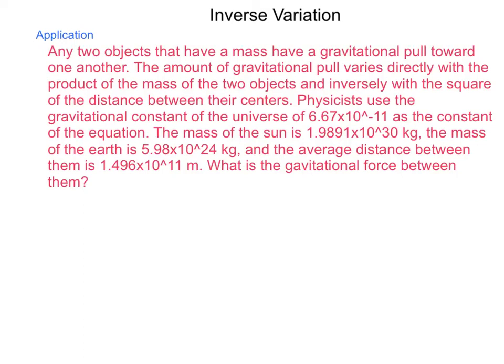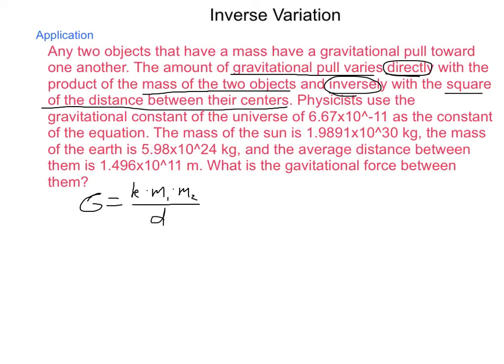What is their gravitational force? So, the first thing we need to do is take this information and organize it into a combined variation equation. So, the gravitational pull, G, varies directly, so it equals some constant times the mass of the two objects. So, that would be mass 1 times mass 2, and inversely with the square of the distance between their centers divided by d squared. And we're told that the constant is the gravitational constant of the universe, 6.67 times 10 to the negative 11th.